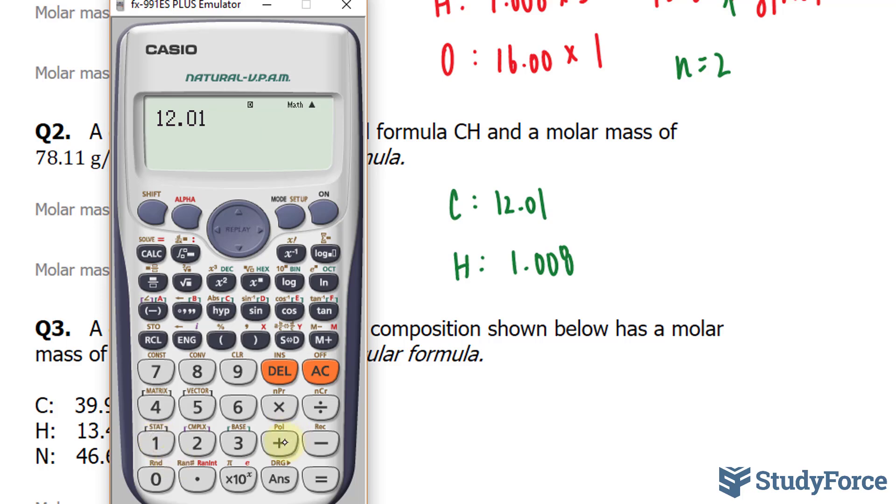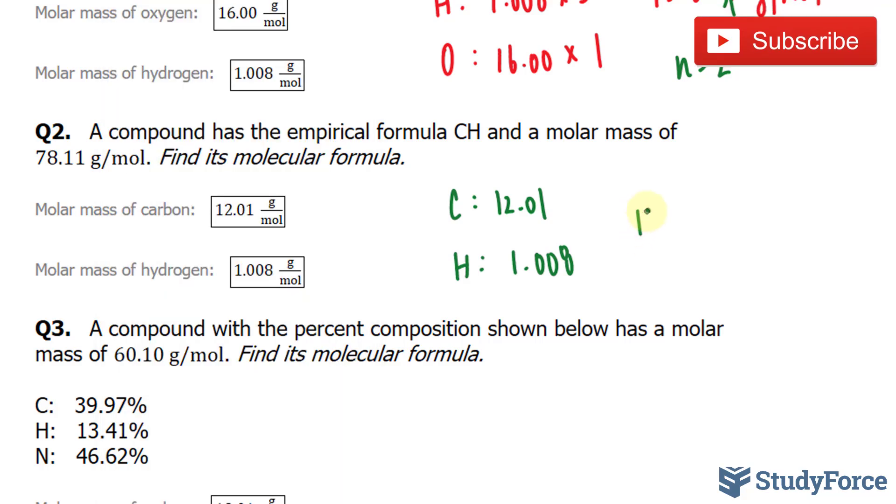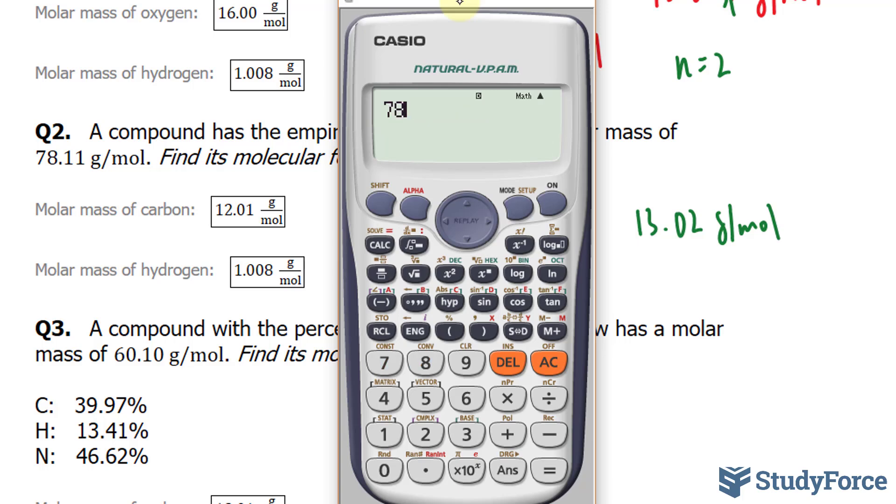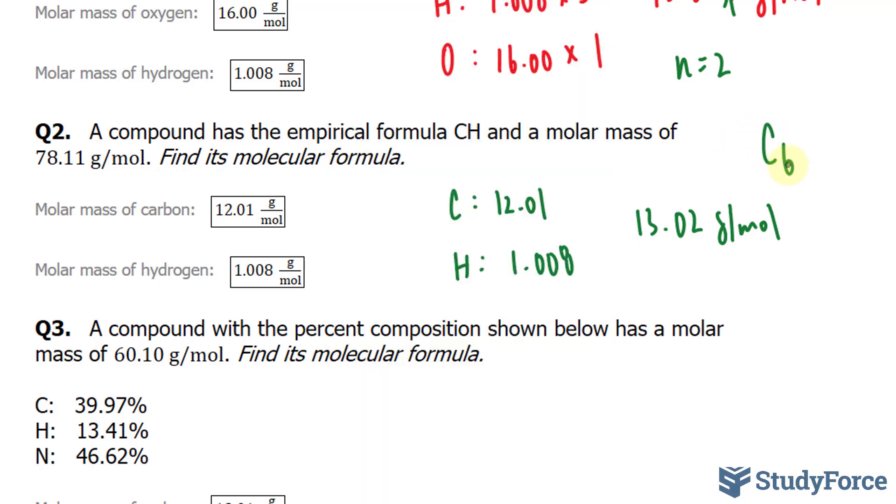12.01 plus 1.008, and we'll limit our number to two decimal places. So we have 13.02 grams per mole. We'll divide 78.11 by this number like this, where I have 78.11 divided by 13.02. That gives us approximately 6, so our formula is C6H6.